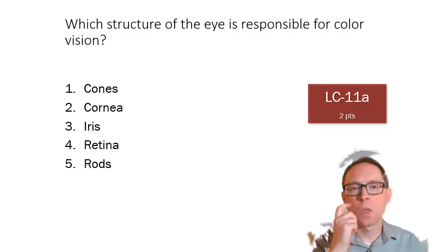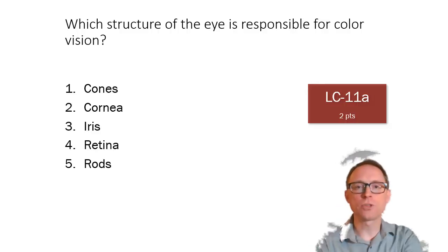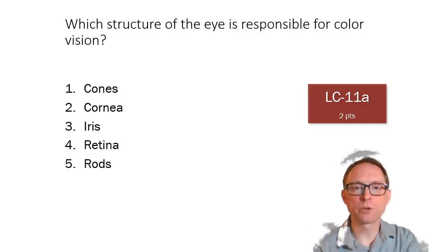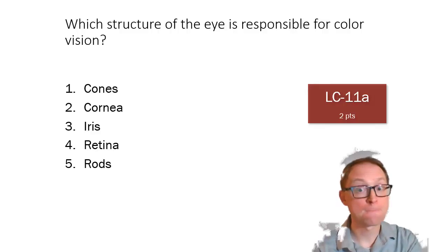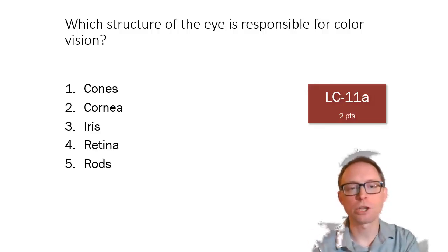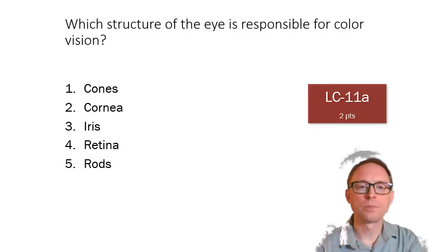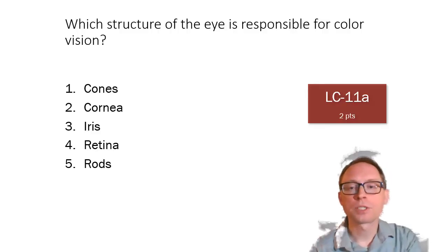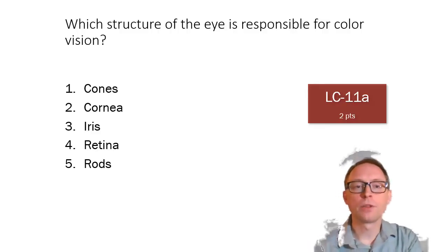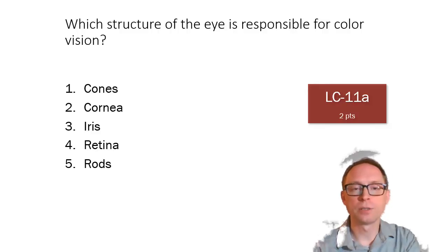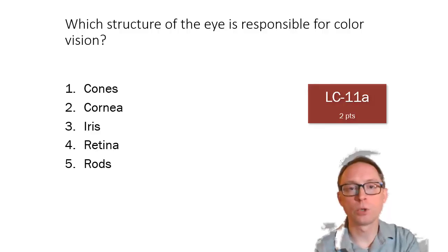Review question: which structure of the eye is responsible for color vision? The answer is the cones. Cones are the cells in the retina responsible for color vision, and their highest concentration is in the fovea.